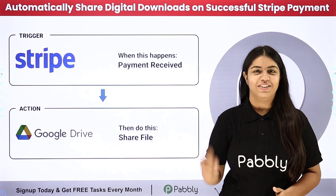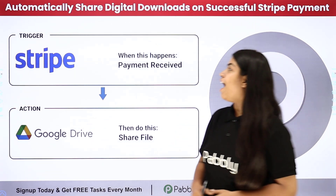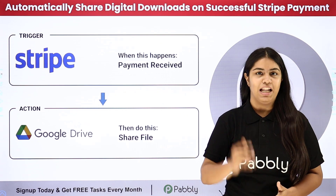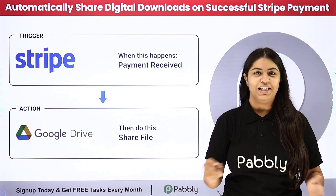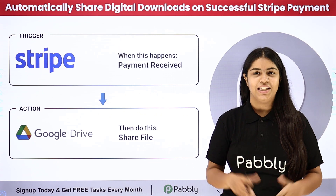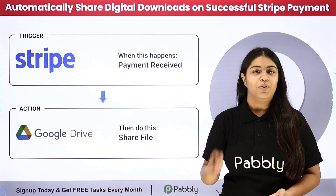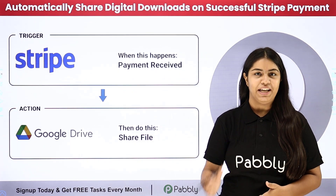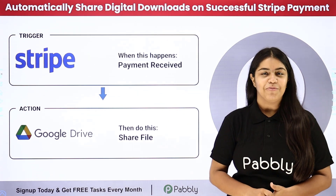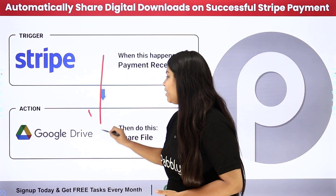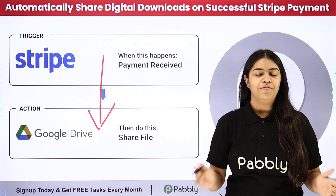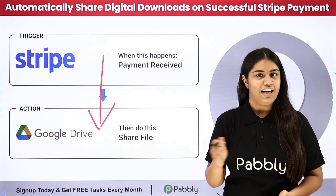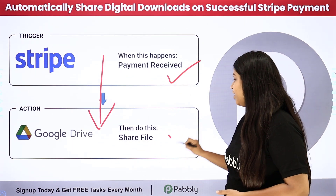Hello everyone, welcome back to Publish. In this video we are going to understand how to automatically share digital downloads on successful Stripe payment. If you are also selling your products with the help of Stripe, then this video is definitely for you. I am selling some of my courses with Stripe, and I want that as soon as a new course is purchased, my customer should automatically receive the course PDF on their Google Drive account. To do this, I am going to create a connection between Stripe and Google Drive using Pably Connect, an amazing automation software. For the trigger we are going to use Stripe and for the action we are using Google Drive.